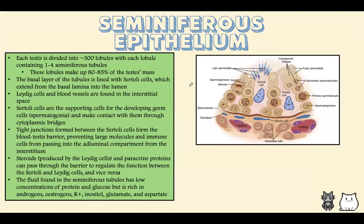The testis is divided into 300 lobules, each with one to four seminiferous tubules, making up 80–85% of testicular mass. The basal layer of the tubule is lined with Sertoli cells, going from the basal lamina all the way to the lumen where you have mature sperm. In between the Sertoli cells are developing spermatozoa — from spermatogonia at the base to primary spermatocytes, secondary spermatocytes, and spermatids. Sertoli cells maintain a connection with developing sperm through cytoplasmic bridges. There are also tight junctions formed between Sertoli cells, forming the blood-testis barrier.